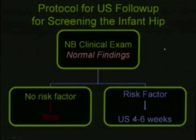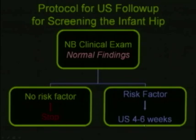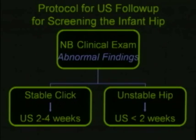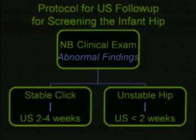For the screening algorithm: if a baby has a normal clinical exam and no risk factors, no imaging is needed. If there is a risk factor, sonography is preferably performed at four to six weeks. With an abnormal clinical exam or stable click, babies are usually scanned at about two to four weeks. If there is any sign of instability, scanning is done immediately after birth and certainly within less than two weeks.